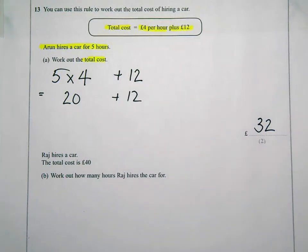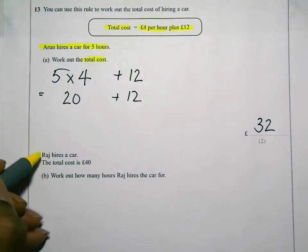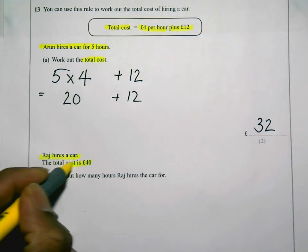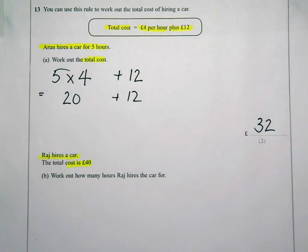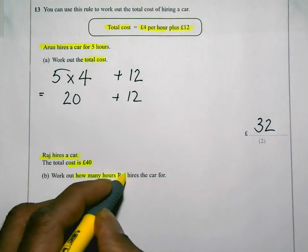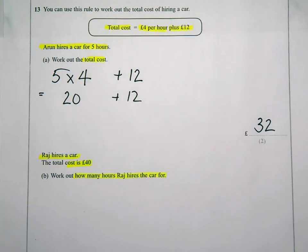Look at the next one. Raj hires a car as well. The total cost, his total cost is forty pounds. And now they want us to work out how many hours Raj hired his car for.